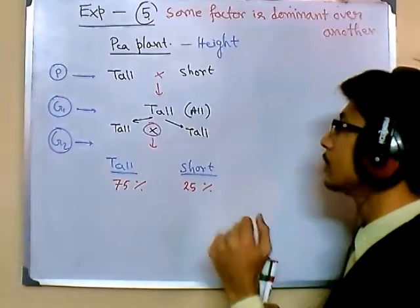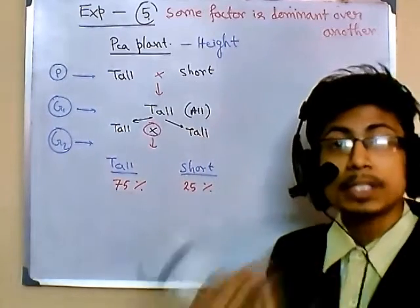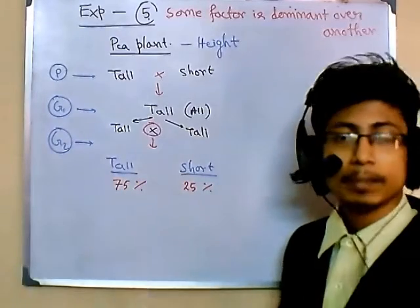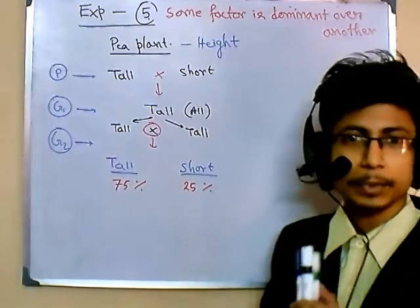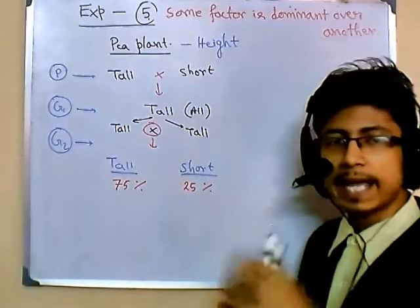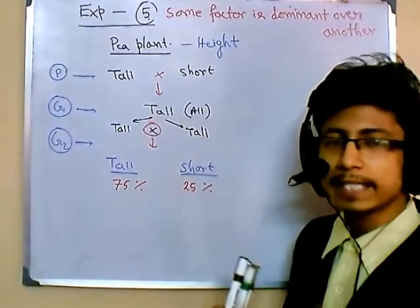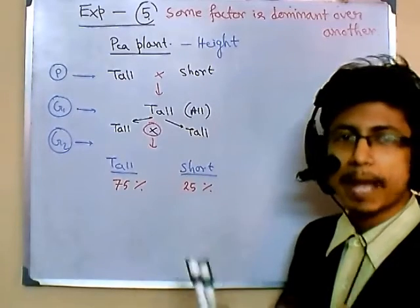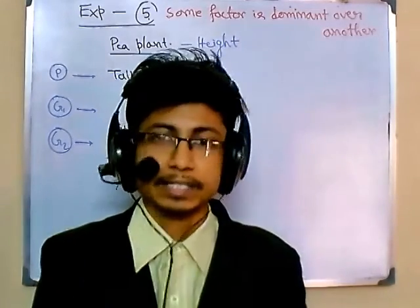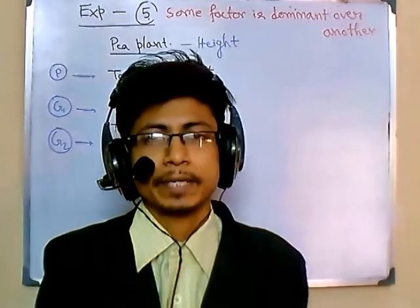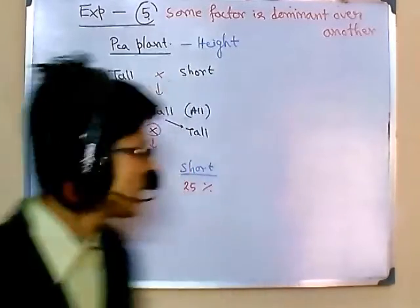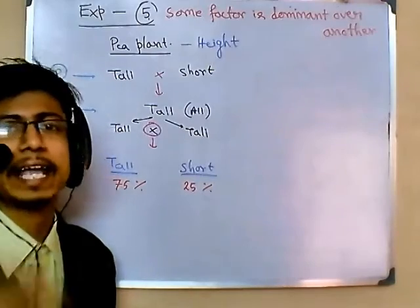Whatever we are looking at here is only the phenotypic expression — phenotype meaning whatever we can see from outside. We can see tall, we can see short, but we cannot see the factor itself. So he wanted to find out what is going on at the factor level, and he used a mathematical approach. Reginald Punnett, another scientist of that time, produced a technique — a mathematical approach — to find out the offspring and percentage of offspring after any kind of cross.